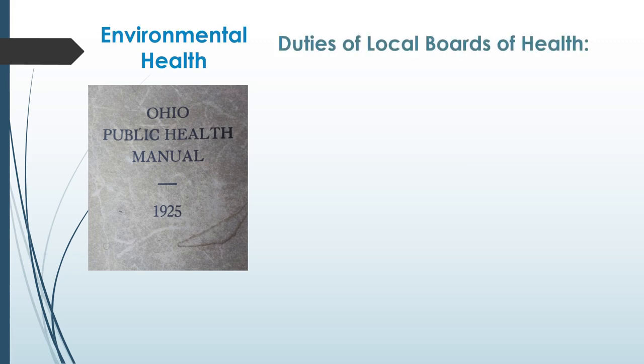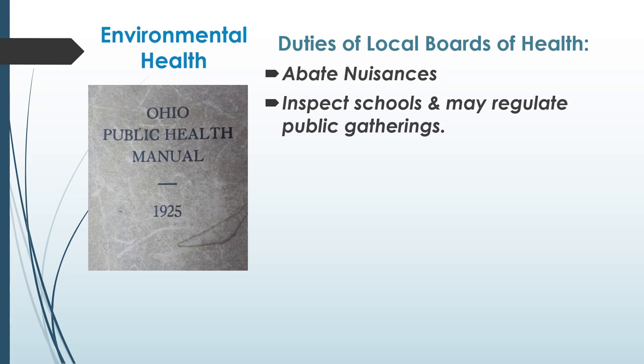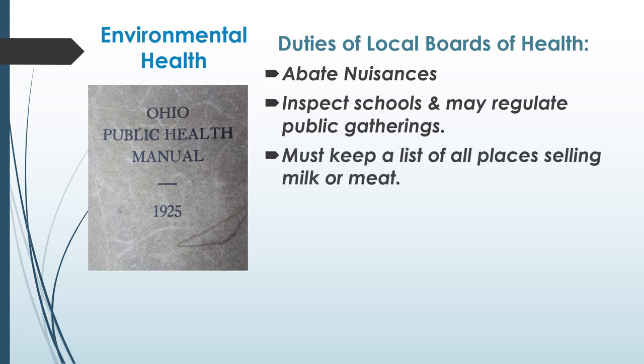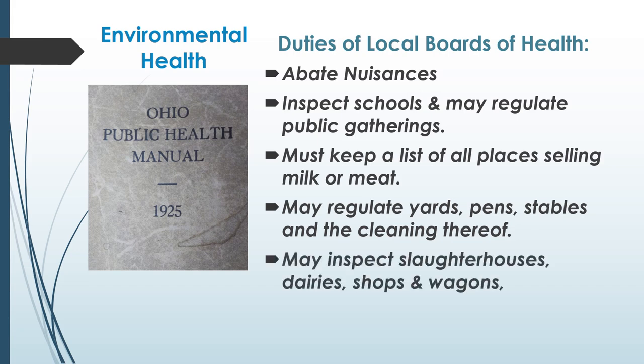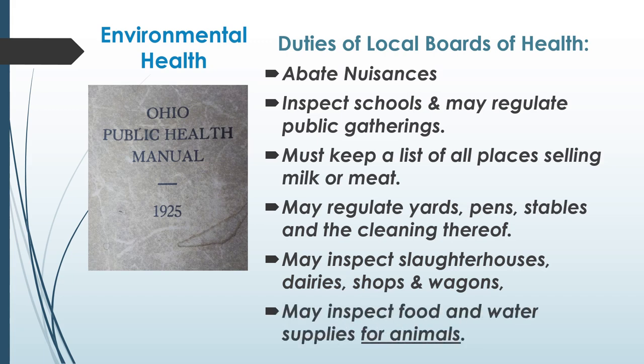The duties of local boards of health were to abate nuisances, inspect schools, and may regulate public gatherings. They must keep a list of all places selling milk or meat, and may regulate yards, pens, stables and their cleaning. They may also inspect slaughterhouses, dairies, shops, wagons, and food and water supplies for animals.